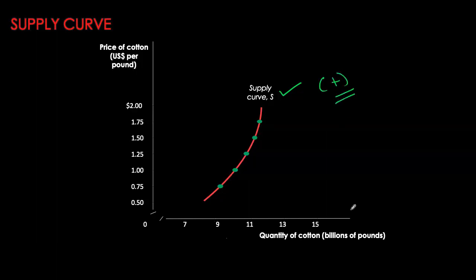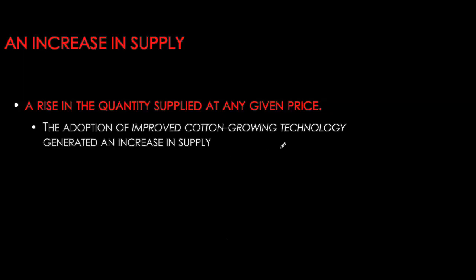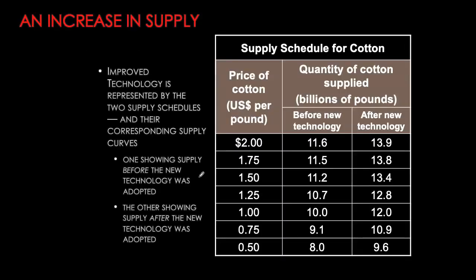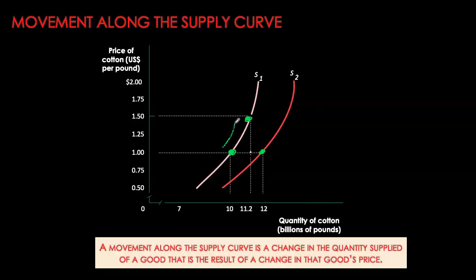An increase in supply — much like an increase in demand — refers to an increase in quantity supplied at any given price. One of those non-price factors can cause supply to increase or decrease. For example, if a farmer adopts technology that improves cotton production, then at any given price, quantity supplied is now going to be higher. The old supply schedule becomes redundant, and plotting these new coordinate points we see the supply curve shifting to the right, giving us a new supply curve.